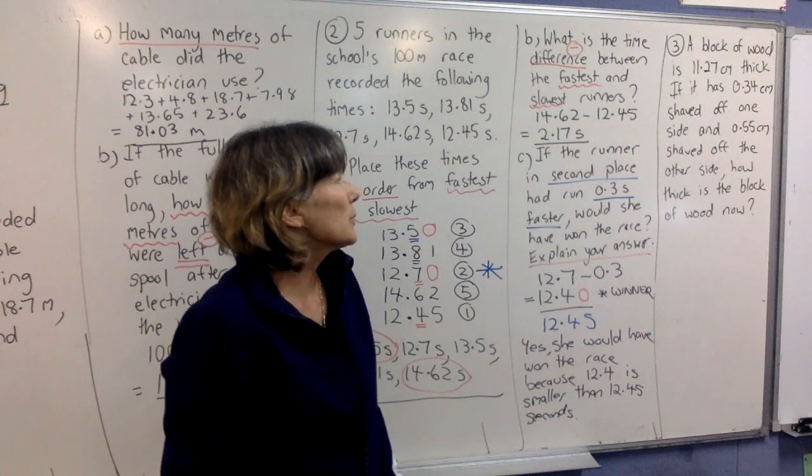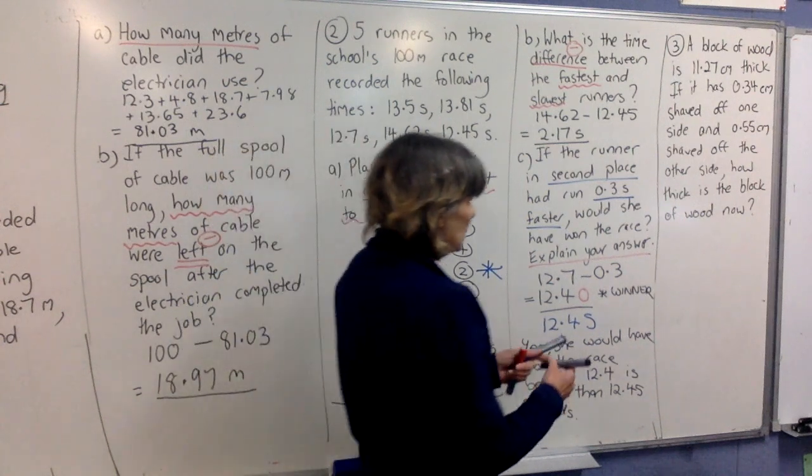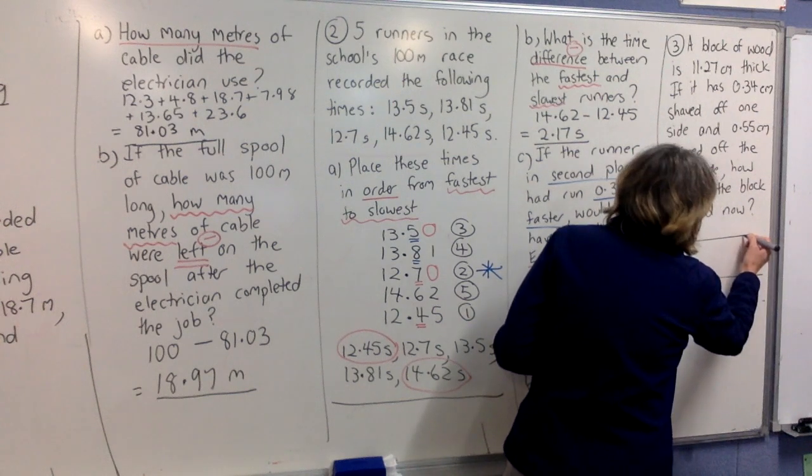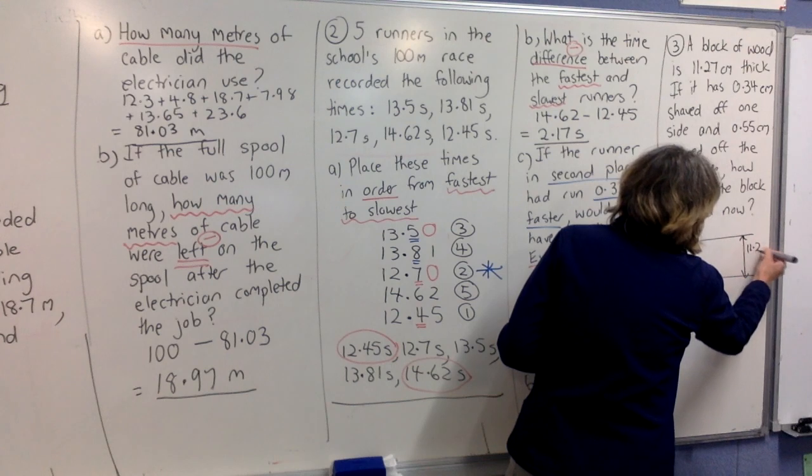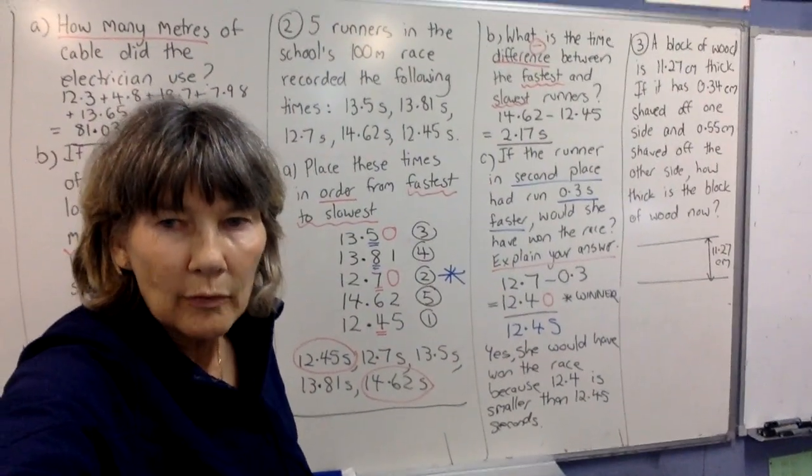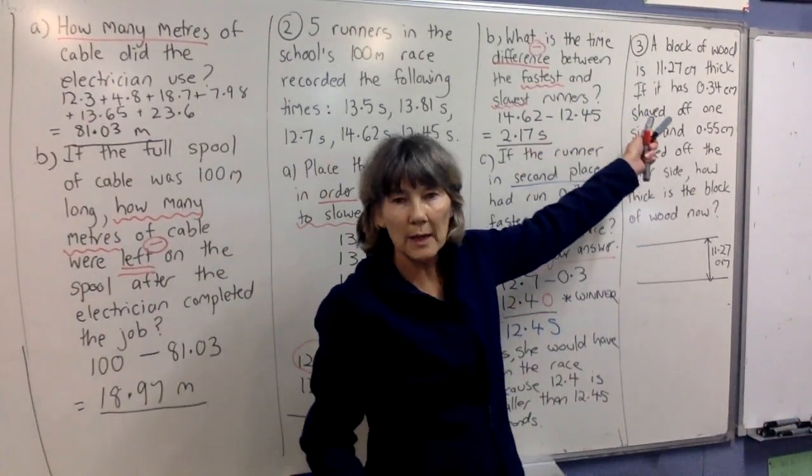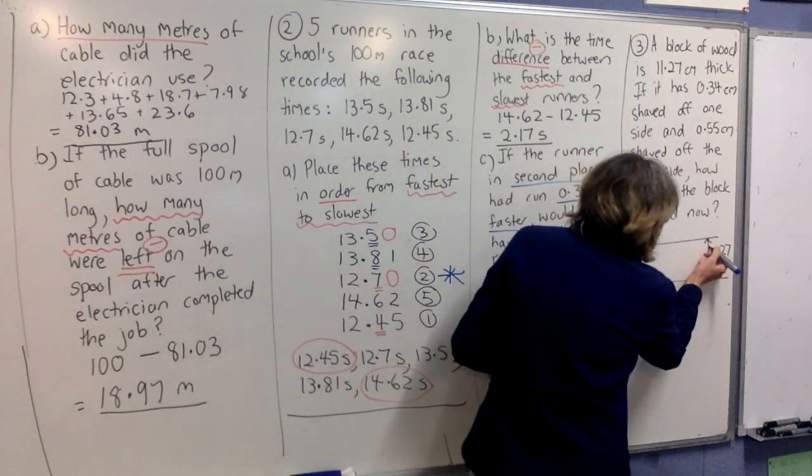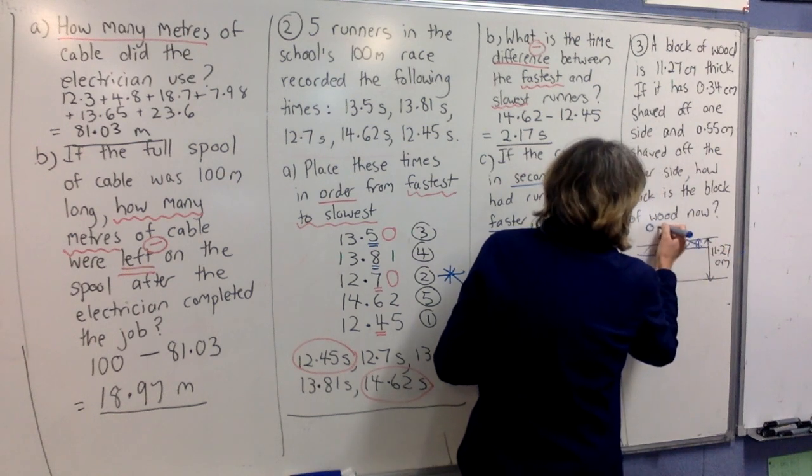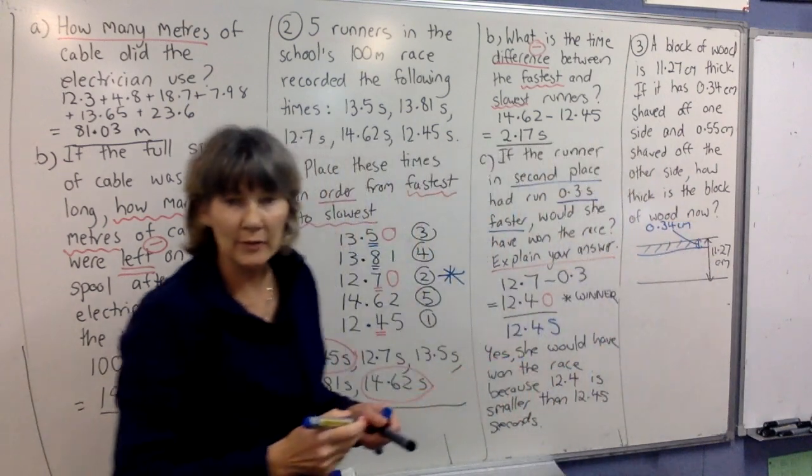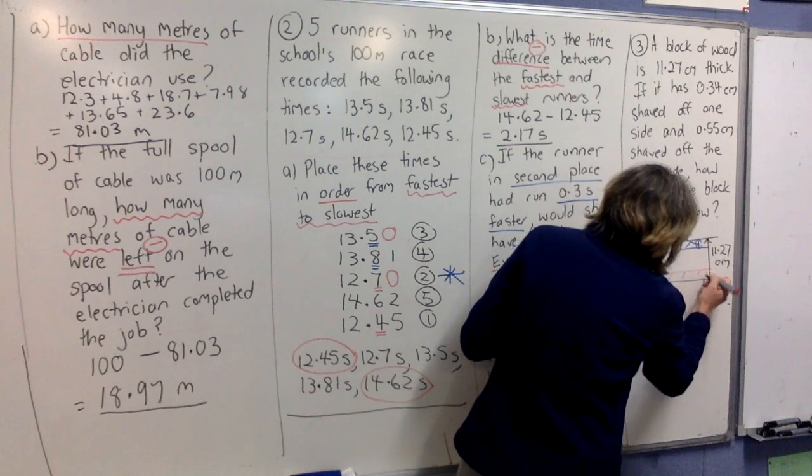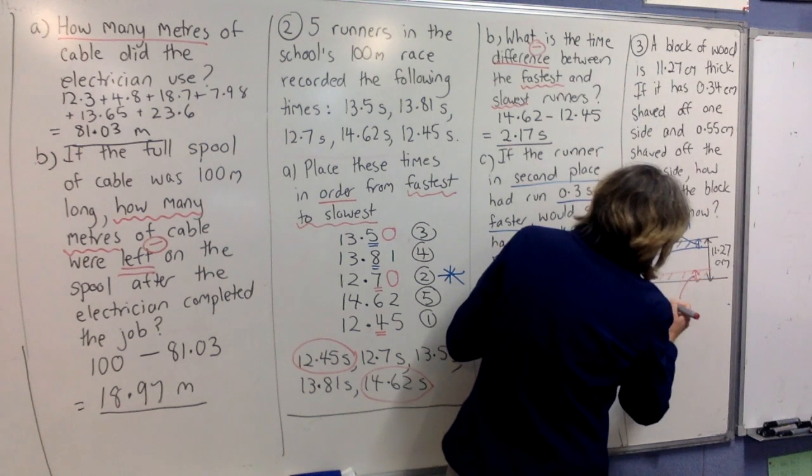Okay, let's look at the next question. We have a block of wood. It's 11.27 centimetres thick. Right? So, let's just do a drawing. If you don't understand a question, do a drawing. Okay, so here's your block of wood. And that's the thickness and it's 11.27 centimetres. Okay, now, if that's how thick it is and then we are going to shave some off it. All right, so I'm going to shave 0.34 centimetres off one end. So, up here, I'm going to shave off this bit. And that bit is, I'll just write it up here, 0.34 centimetres. Then I'm going to shave some off the other side. 0.55 centimetres. Shave a bit off. So, that thickness there, 0.55 centimetres.